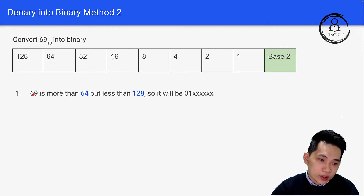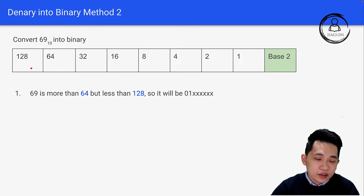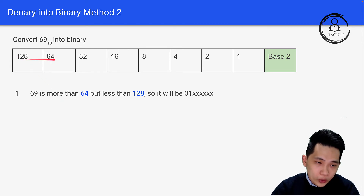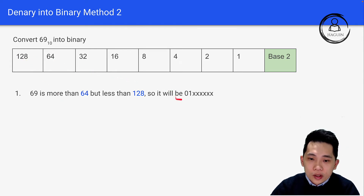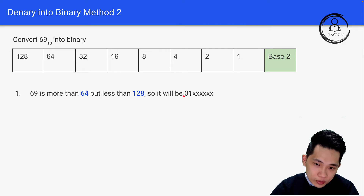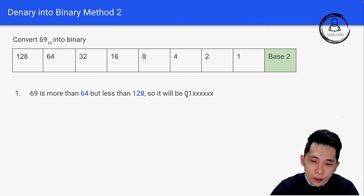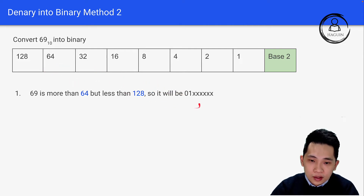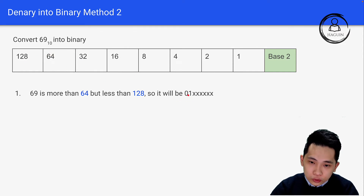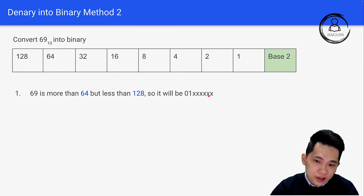We know 69 is more than 64, so 69 is between 128 and 64. For the bit representing 128, we put 0. We put 1 for 64. So far the bit pattern starts with 0, 1, and then unknowns for the remaining positions.